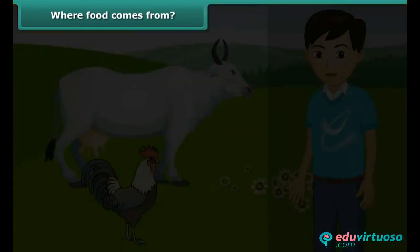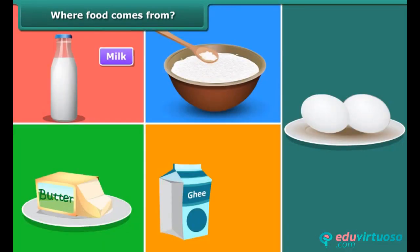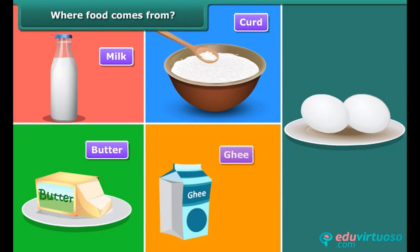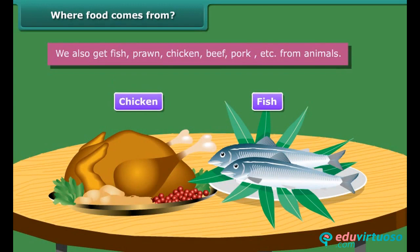Some food we also get from animals — like milk, curd, butter, ghee, eggs, etc. We also get fish, prawn, chicken, beef, pork, etc. from animals.